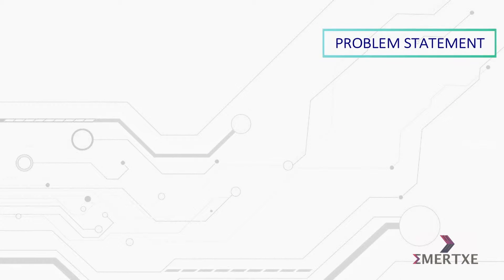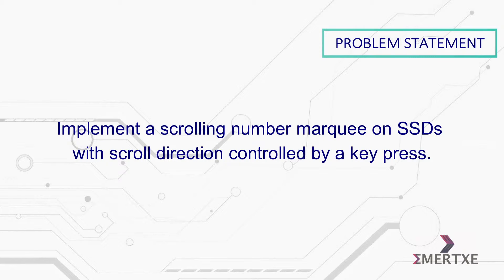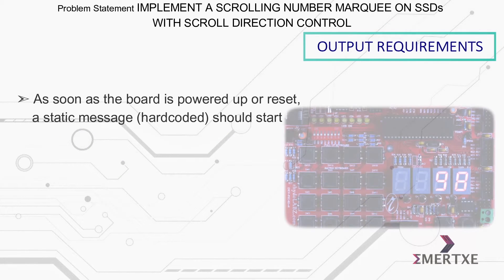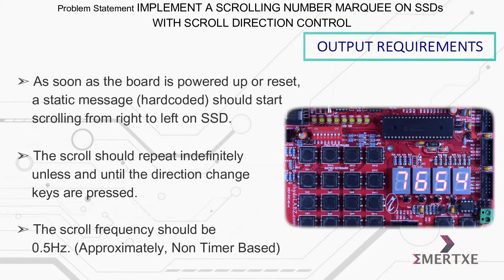In this assignment, you have to implement a scrolling number marquee on SSD with scroll direction controlled by a key press. As soon as the board is powered up or reset, a static message should start scrolling from right to left on SSD. The scroll should repeat indefinitely unless and until the direction change keys are pressed.